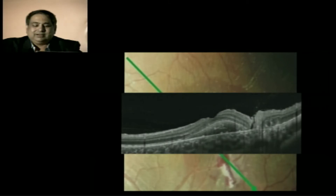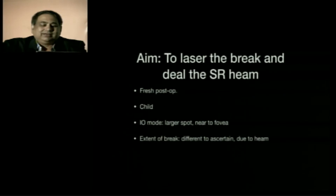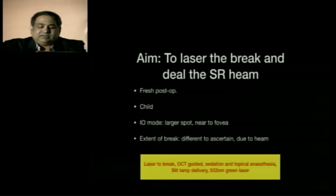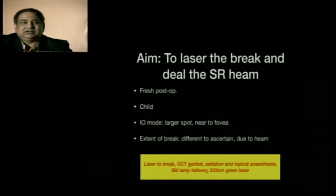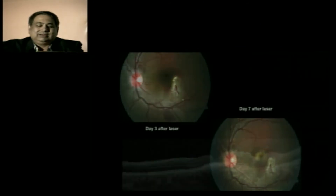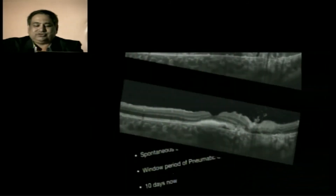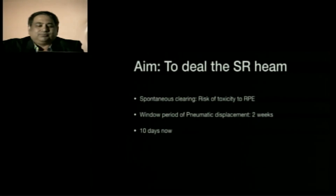The next day we performed OCT to determine the extent of the break. You can see sub-retinal hemorrhage and the retinal break. The challenge was managing a fresh post-op child — whether to use indirect or slit lamp laser for a larger spot near the fovea. We used indirect delivery, though it was difficult to differentiate the extent of the break due to hemorrhage. The laser was performed OCT-guided, under sedation and topical anesthesia with slit lamp delivery. By day 3 and day 7 post-laser, the sub-retinal hemorrhage became more organized, and OCT confirmed the break was closed.